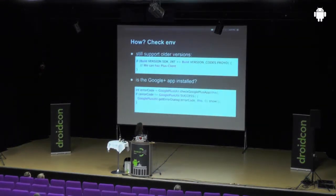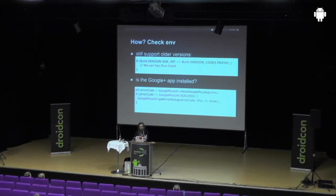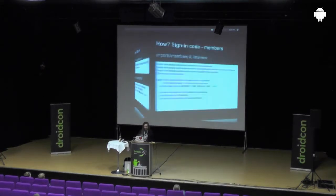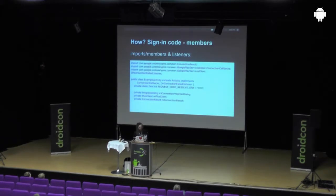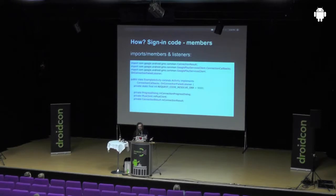Now, finally, some code. When you want to support all versions, you have to check because for the plus client you need Froyo and above. Then you can check if the Google Plus app is installed and degrade gracefully, or show the user a dialogue to install the app — you get that with Google Plus Util using the line get error dialogue, and then the user can install the app. Now some more code — that's the activity. You can also wrap this whole lifecycle in a fragment. The most important thing is the plus client instance, because that's the handle you need to do all the plus interaction later on.